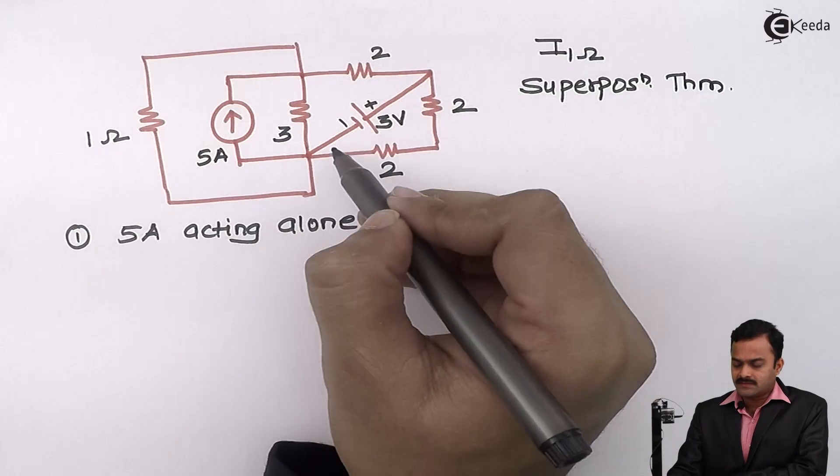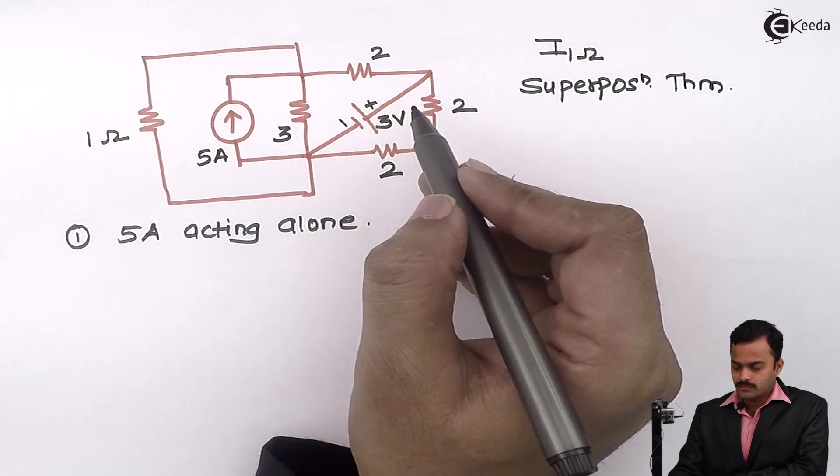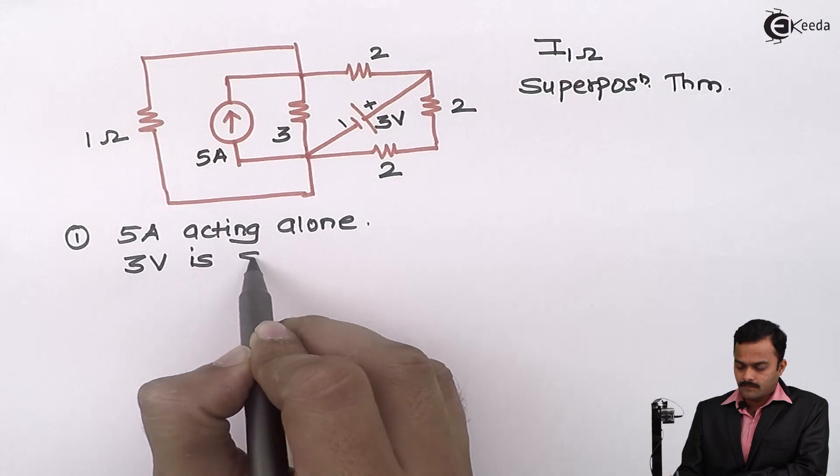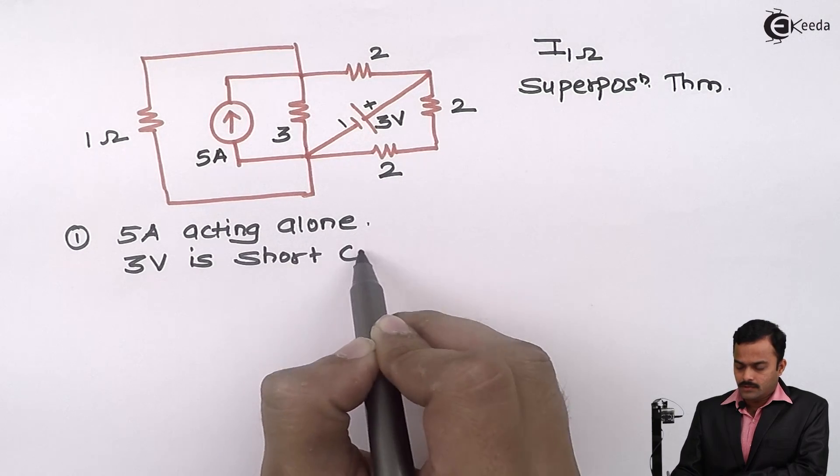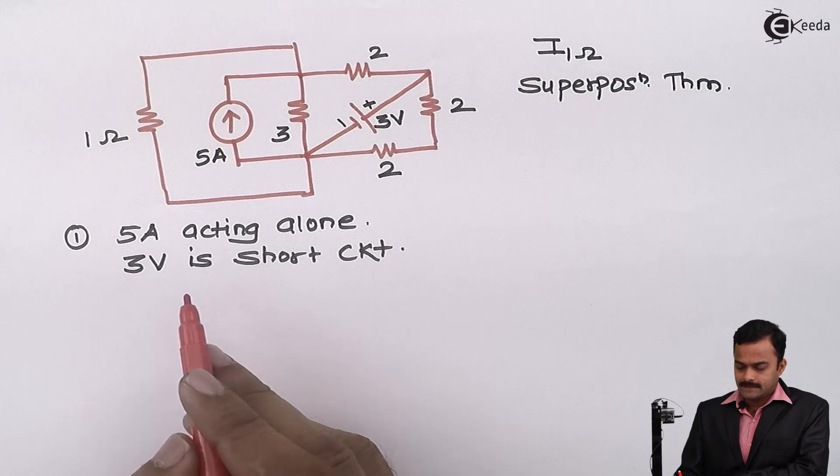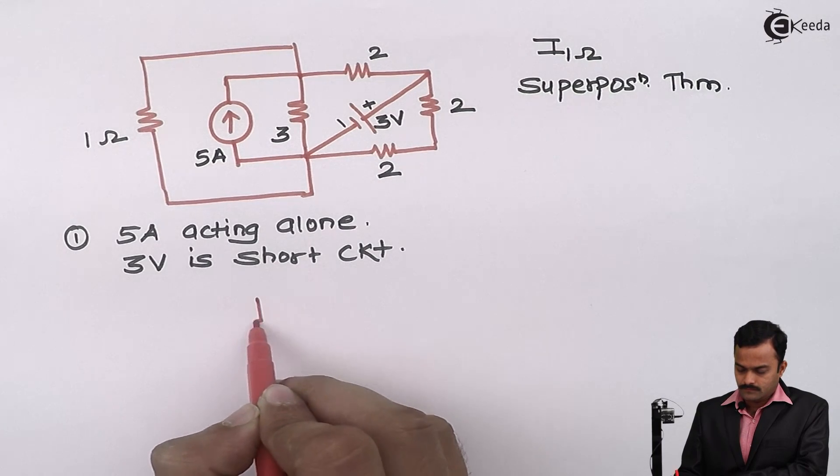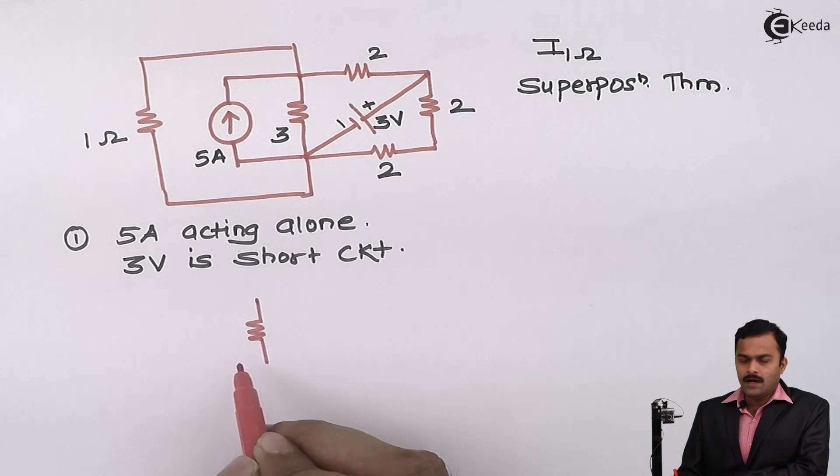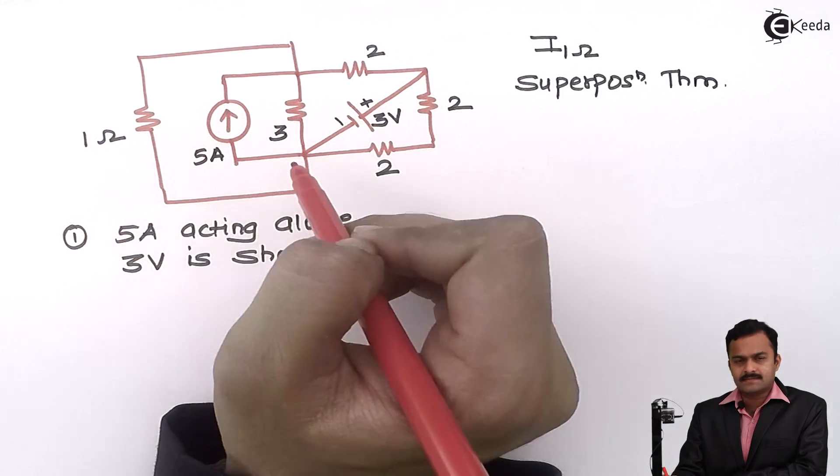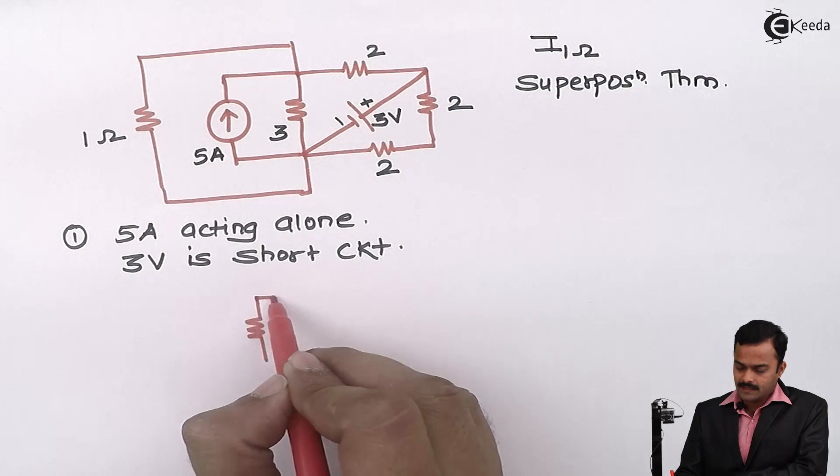The only source left is 3 volt, being a voltage source, we need to short circuit it. So 3 volt is short circuited. I will get structure like this. Now, instead of having a resistance 1 ohm connected like this, I can connect it like this also.